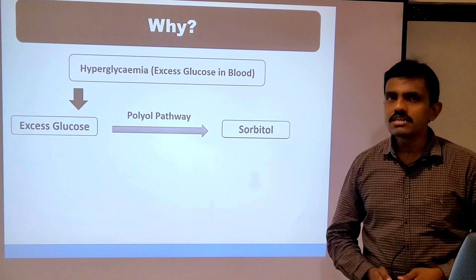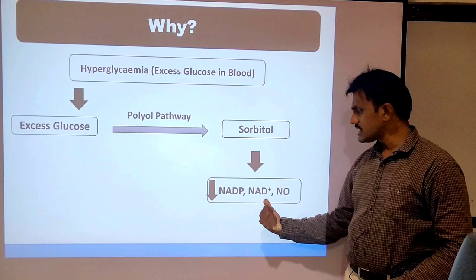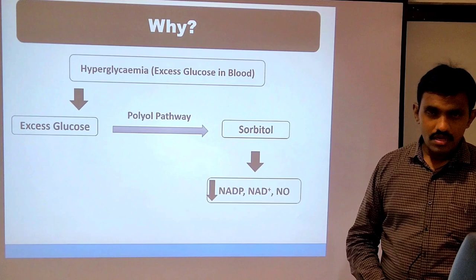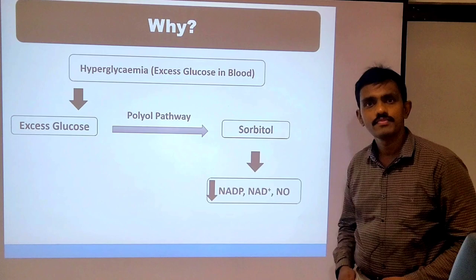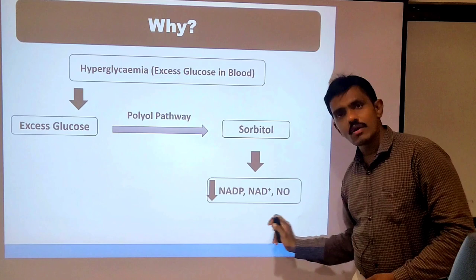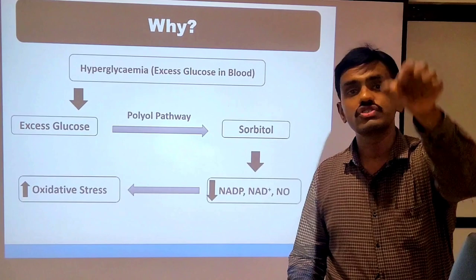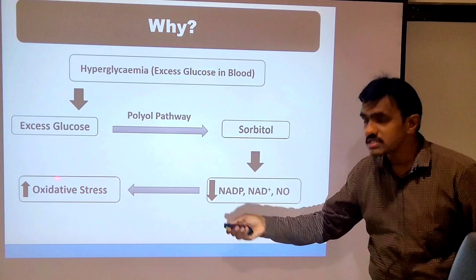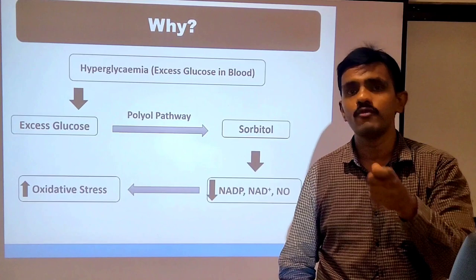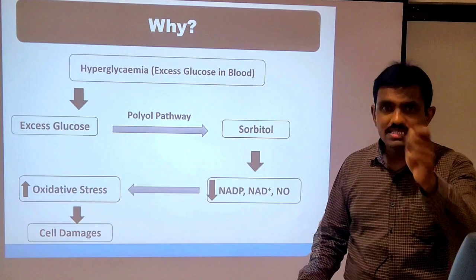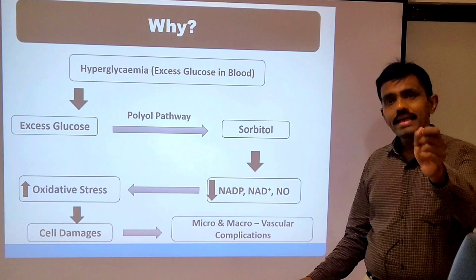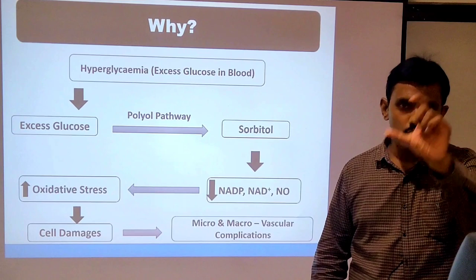Sorbitol itself is not directly harmful to the body. But when you are making sorbitol through the polyol pathway, this process reduces certain important molecules — NADPH, NAD+, and nitric oxide. When these are reduced, oxidative stress in the body increases significantly. This oxidative stress is extremely harmful and starts damaging cells.